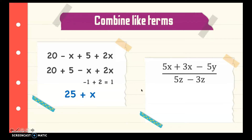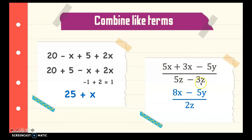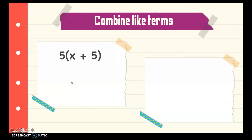Next: 5x plus 3x minus 5y, divided by 5z minus 3z. We combine the x terms: 5x plus 3x equals 8x. Then we combine the z terms: 5z minus 3z equals 2z. So the answer is 8x minus 5y over 2z.